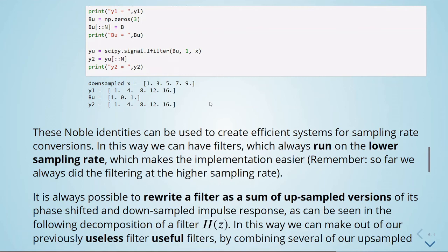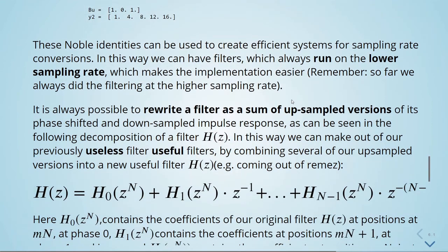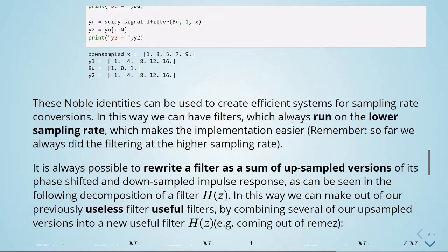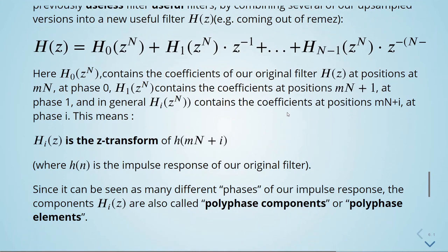These Noble identities can be used to create efficient systems for sampling rate conversions, allowing filters to always run on the lower sampling rate, which makes implementation easier. It is also possible to rewrite a filter as a sum of upsampled versions of its phase-shifted and downsampled impulse response — a kind of polyphase decomposition. This gives us polyphase components or polyphase elements, combining upsampled versions into a new usable filter.